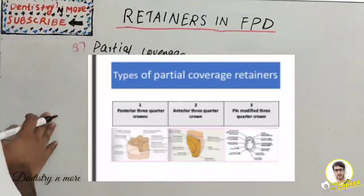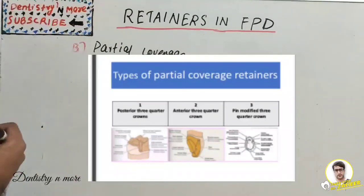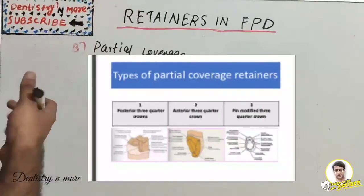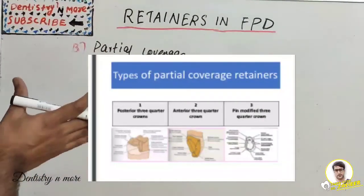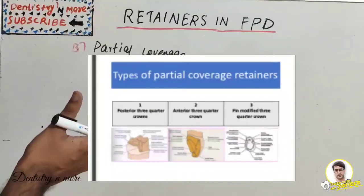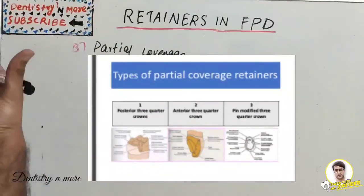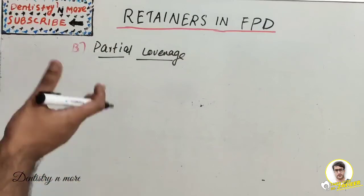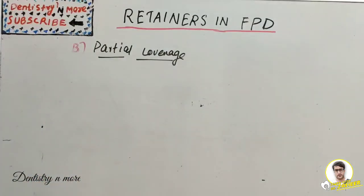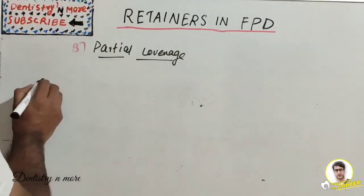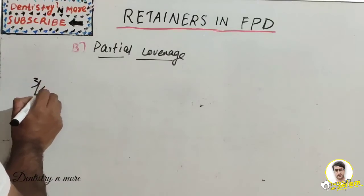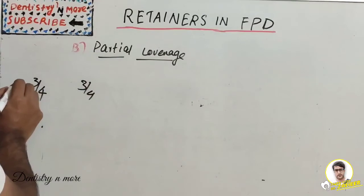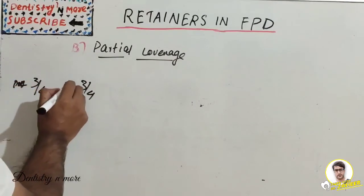Partial coverage retainers are contraindicated in teeth with short clinical crowns, thin buccolingual dimension, approximately bulbous or poorly aligned teeth, and patients with bad oral hygiene and high caries. There are three main types: the posterior three-quarter crown, the anterior three-quarter crown, and the pin-modified three-quarter crown.